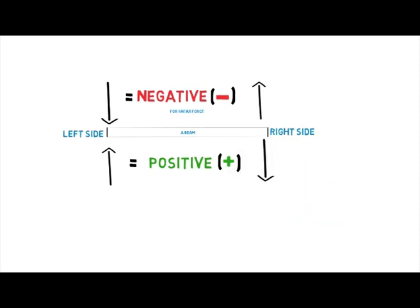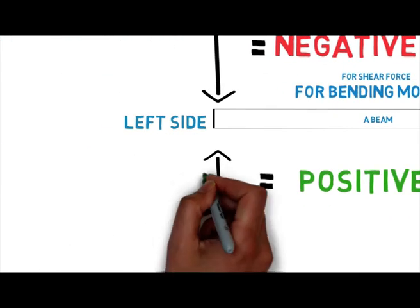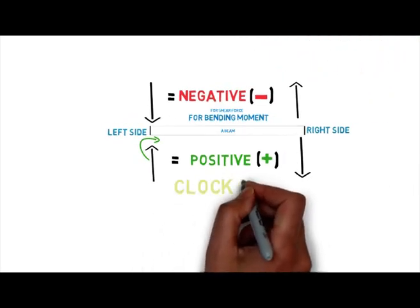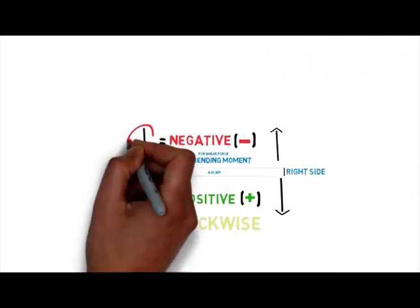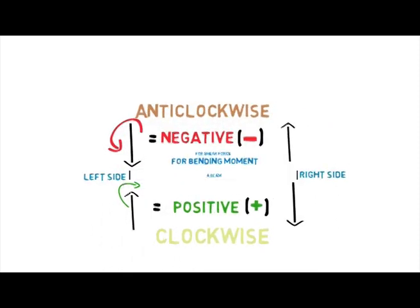Then for the bending moment, the sign convention is the same. When the force is acting downwards, the moment bends in an anti-clockwise direction. And when the force is acting upwards, the moment bends in a clockwise direction.